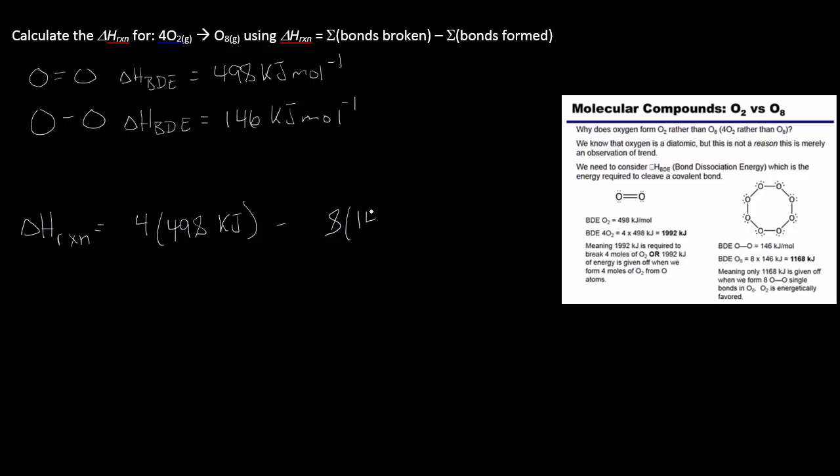So the enthalpy of the reaction is four times the bond enthalpy for the oxygen-oxygen double bond minus eight times the bond enthalpy for the oxygen-oxygen single bond, which I would get by drawing those Lewis structures and counting the number of bonds.